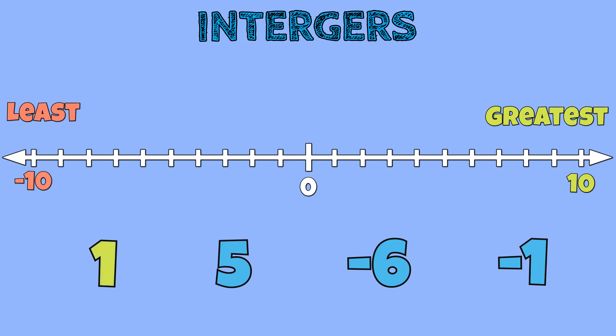The number 1 is positive, so it will be 1 unit to the right of 0. The number 5 is positive, so it will also be 5 units to the right of 0.